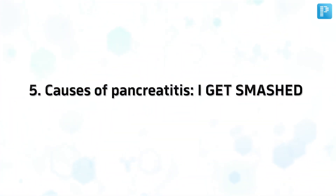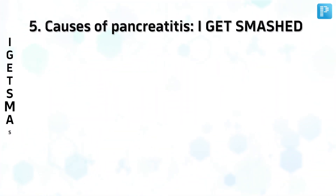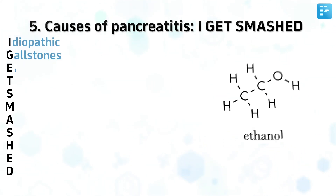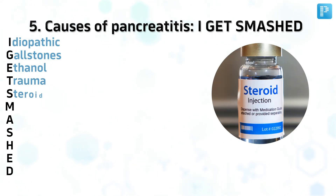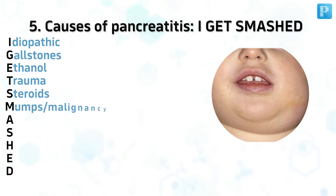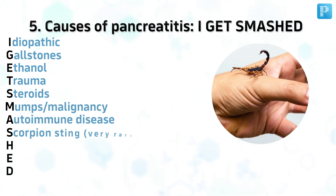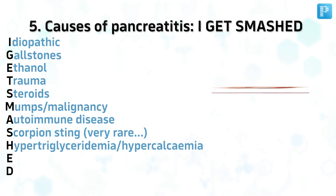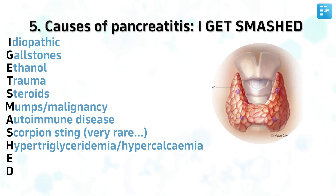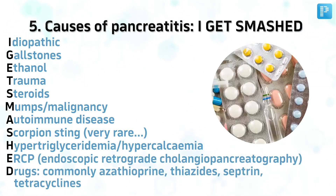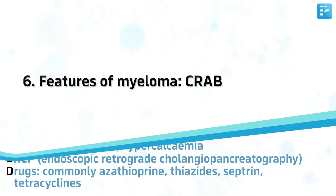Number 5. Causes of Pancreatitis: I GET SMASHED. Idiopathic, Gallstones, Ethanol, Trauma, Steroids, Mumps, Malignancy, Autoimmune Disease, Scorpion Sting, Hypercalcemia, Hypertriglyceridemia, ERCP, Drugs — commonly Azathioprine, Thiazides, Sulphonamides, Tetracyclines.